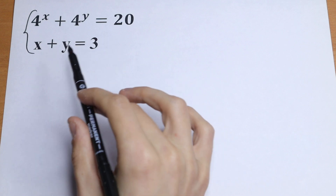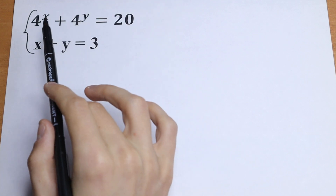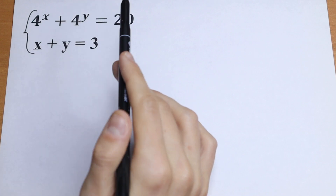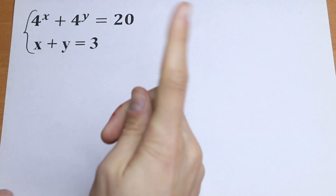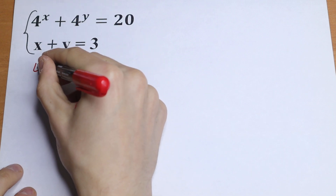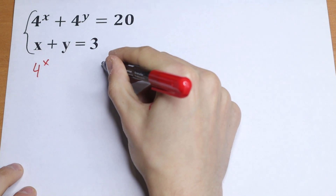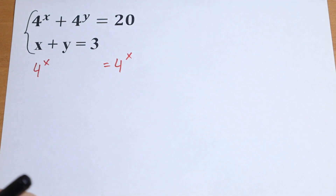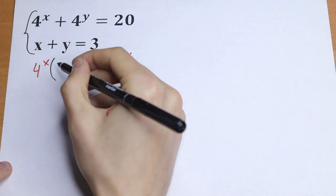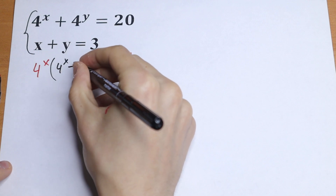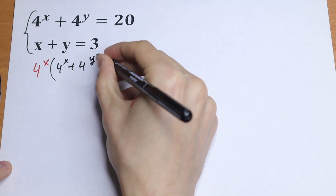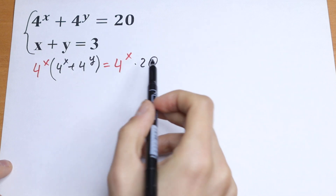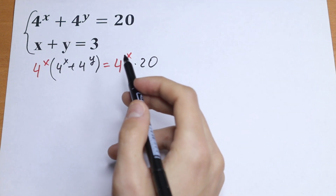First of all, I want to suggest a little trick right here. We need to multiply our first equation by 4 to the power x. We will have 4 to the power x on the left and equal to 4 to the power x on the right, multiplied by 4 to the power x plus 4 to the power y and 20. So we just multiplied both sides by 4 to the power x.